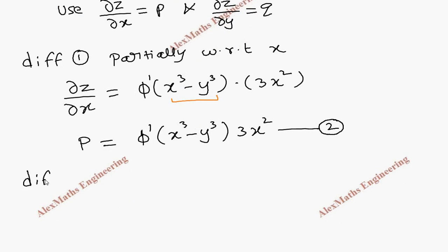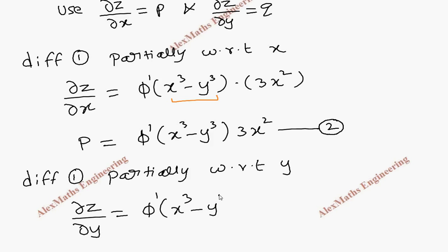Now in the same way, once again take the first expression and differentiate that partially with respect to y. So ∂z/∂y equals phi dash, and the inner function is written as it is. Using chain rule we have to find its derivative and write it as a product here, that will give -3y². x is treated as a constant because we are doing partial derivative with respect to y only.